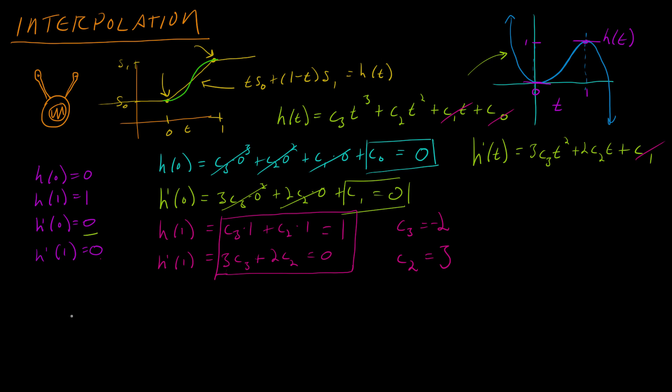So now we know what c3 and c2 are, so we can have our cubic interpolation function h of t is negative 2 t cubed plus 3 t squared. That is the function that will give us this nice smooth transition between 0 and 1 that we can apply to any transition that we have to make a little bit smoother. And so let's go to the code section to see that at work.